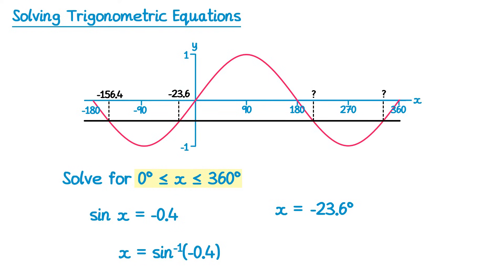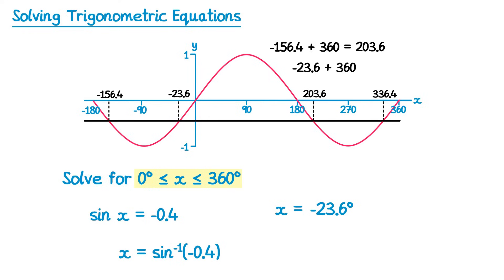There's a really important property of the sine graph — it also applies to cos — it repeats every 360 degrees. To find the solutions I do want on the right-hand side, I'm just going to add 360 degrees to these two solutions. So negative 156.4 plus 360 gives us 203.6 degrees. And negative 23.6 plus 360 gives us 336.4. So we've now found the two solutions we wanted — both between 0 and 360: 203.6 degrees and 336.4 degrees.